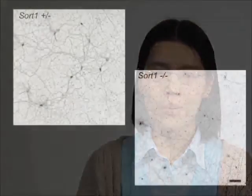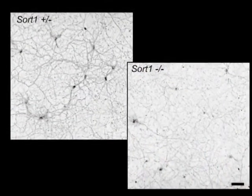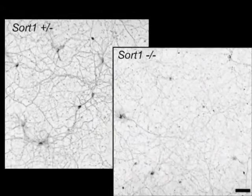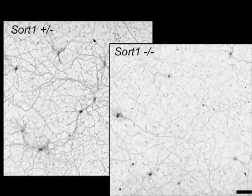To test whether sortilin contributes to progranulin binding in vivo, we measured the binding of the progranulin C-terminal region to neurons cultured from wild-type and sortilin knockout mice. Deletion of sortilin significantly reduced the binding of the progranulin C-terminal fragment to cortical neurons, confirming that sortilin is the main neuronal binding site for progranulin in vivo.